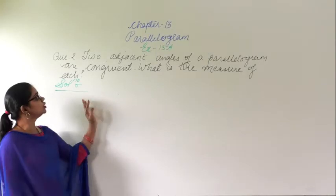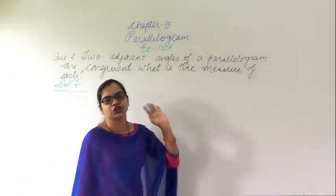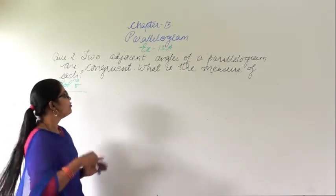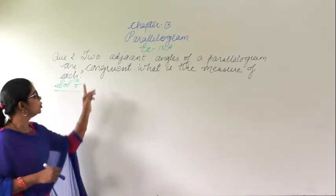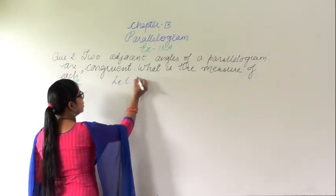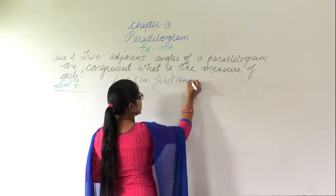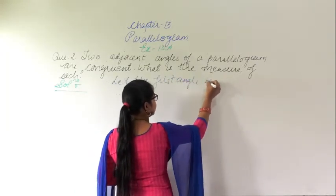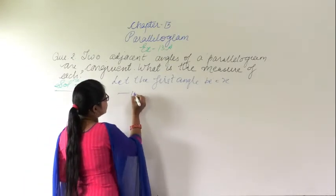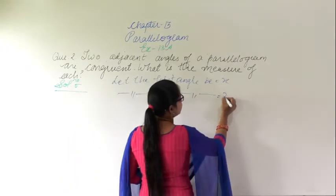Question number 2: two adjacent angles of a parallelogram are equal. What is the measure of each angle? We have to find out. So let the first angle be X, and the second angle also be X.